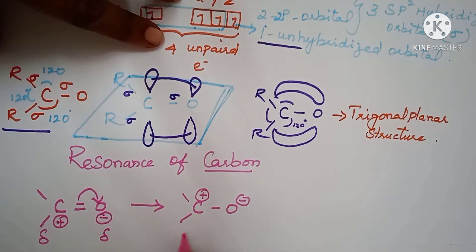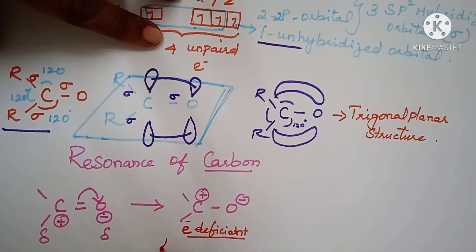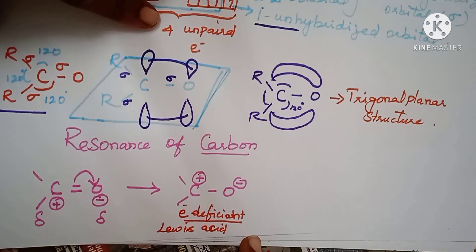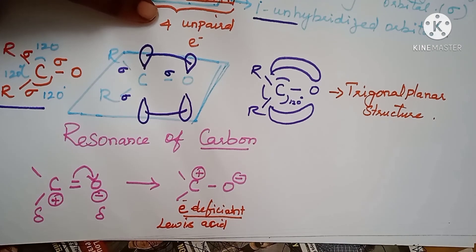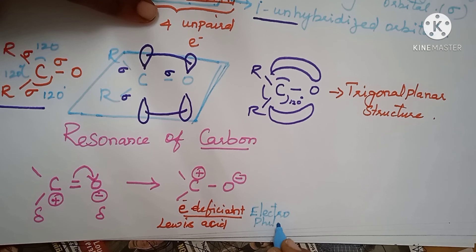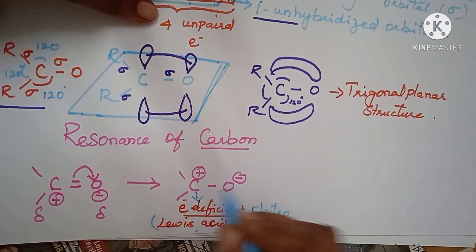So, this is electron deficient. So carbon becomes electron deficient. Electron deficient means, what it is? Lewis acid. Electron deficient, one more word. It is electrophilic. Electrophilic means it wants electrons. That means electron deficient. So it acts as a Lewis acid. Now, this is a carbon axis. Now, oxygen acts as a nucleophilic.